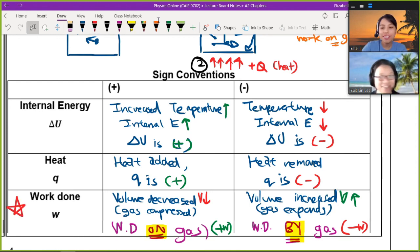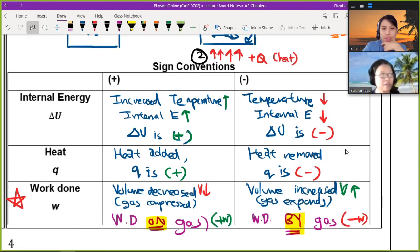So that is the sign convention. If you're confused, always ask yourself what is the physical indicator? Because these ones all have external signifiers. Temperature for internal energy and volume for work done. So read the question.